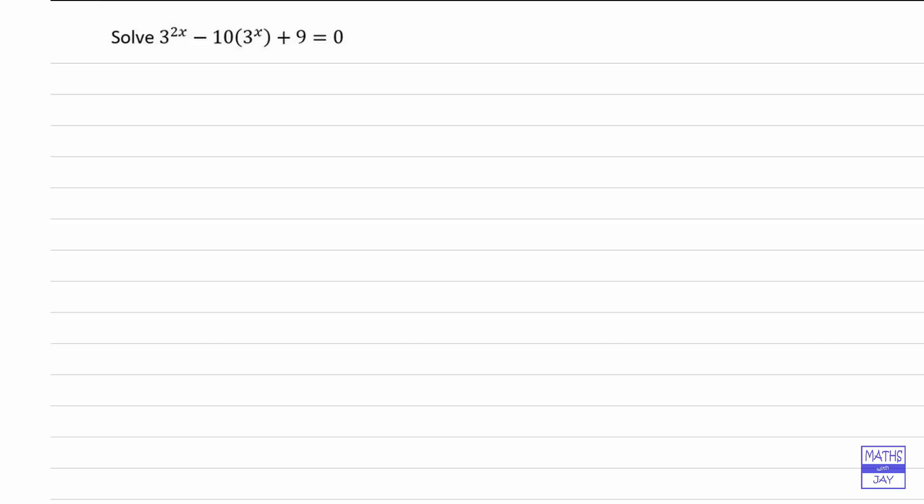And what's important here is that you know that if you've got a number raised to the power of two numbers, like a to the power of m times n, then we know that we can think of that as either a to the m all to the n, or a to the n all to the m.